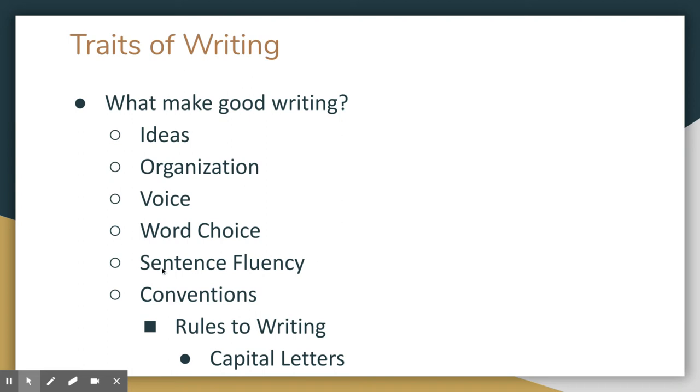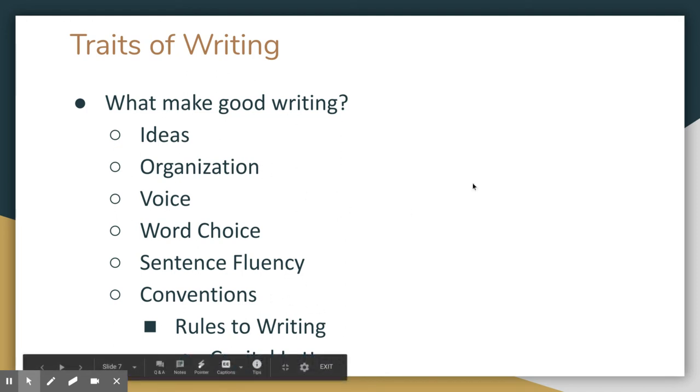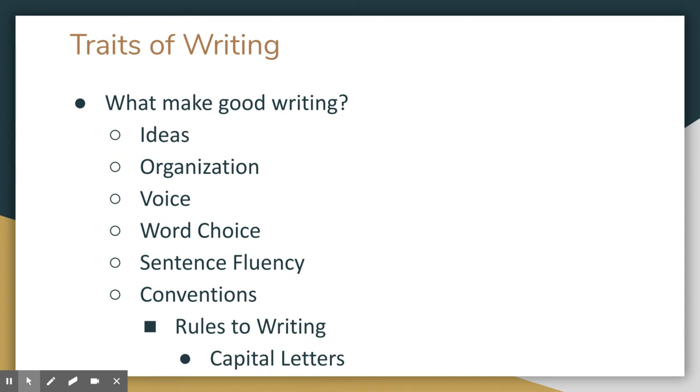Your sentence fluency. So making sure your sentences flow into the next one, showing that they all go together. This one goes very closely with our organization. Last one is the conventions. So these are our rules for writing. These are things like capital letters, spacing, punctuation marks, indenting your paragraphs, using transitional phrases. These are all things that go with our conventions of writing.